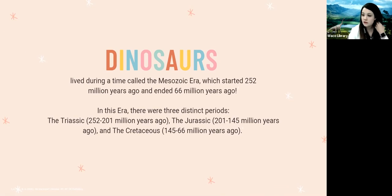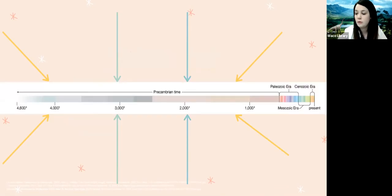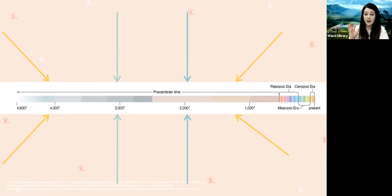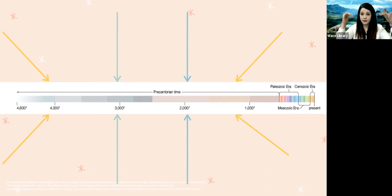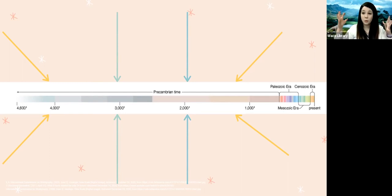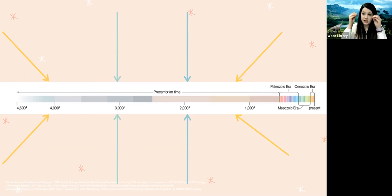Now we're going to look at a chart of the different geologic times on earth. You're going to see a time called Precambrian time, with all the arrows pointing at it. This was the time when earth was formed over four and a half billion years ago, all the way up until the Paleozoic era started about 541 million years ago. This time actually makes up seven-eighths of all the time that earth has existed, and the only living creatures were microscopic organisms.